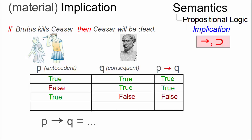However, if Brutus did kill Caesar, but Caesar is not dead, that is, P is true and Q is false, the implication is false too.